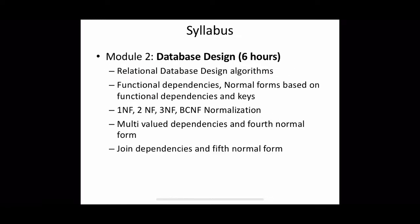Module 2 is about normalization. Relational database design algorithms will be covered here. Different functional dependencies will be discussed, along with different normal forms based on functional dependencies and keys like 1NF, 2NF, etc. Multi-value dependencies and fourth normal forms will be discussed, and finally joint dependencies and fifth normal form will also be covered.